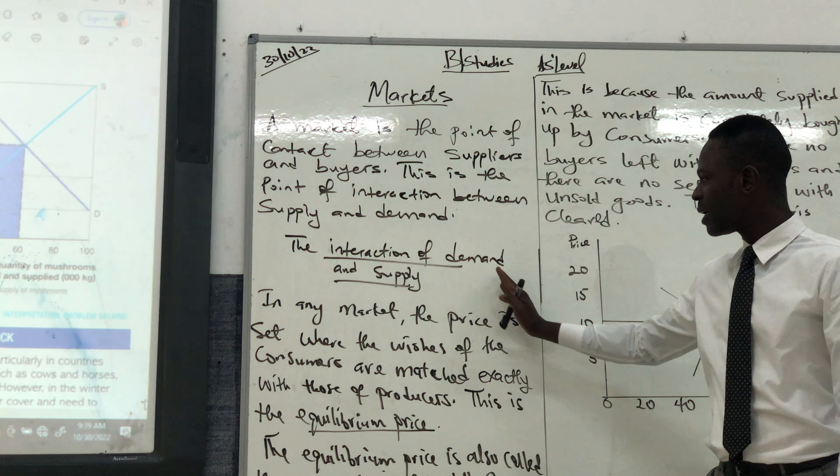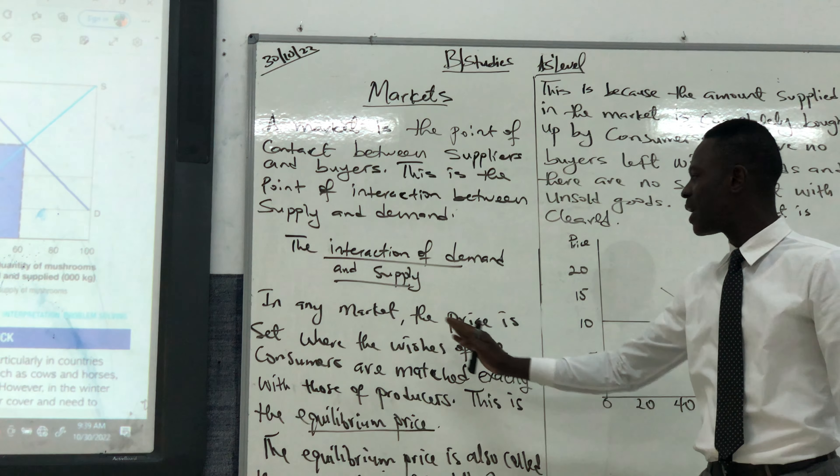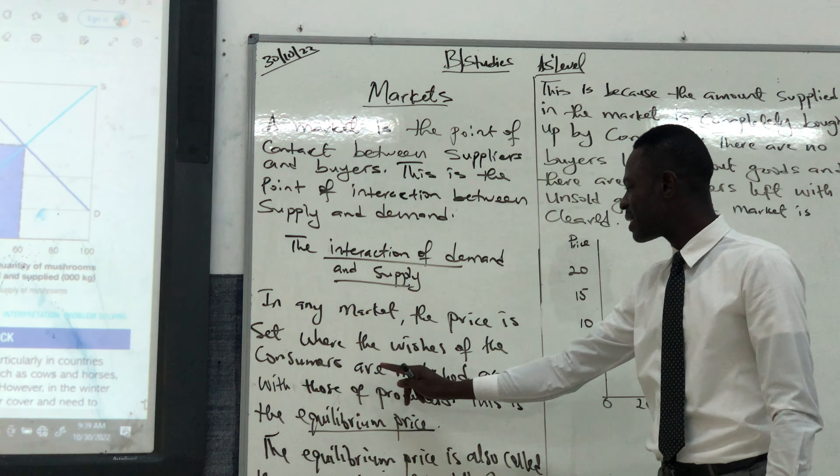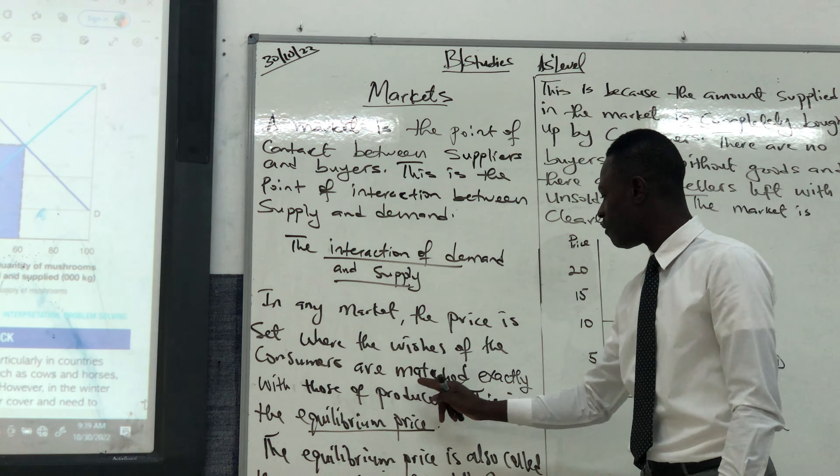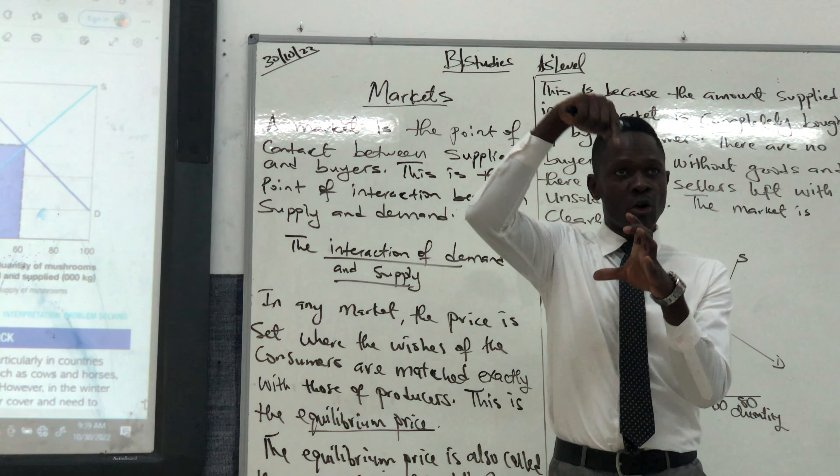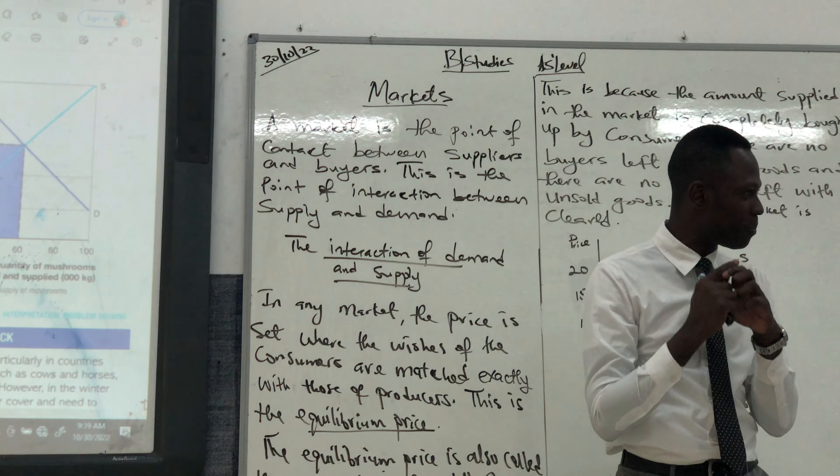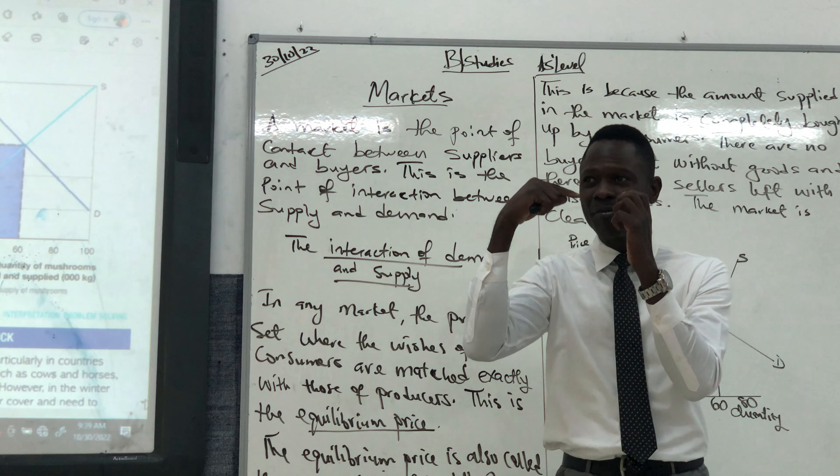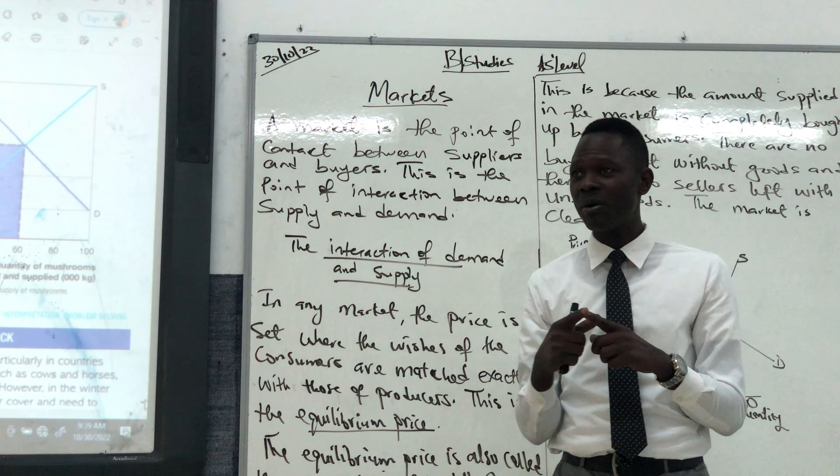Now we go to the interaction of demand and supply. In any market, the price is set where the wishes of the consumers are matched exactly with those of the producers. The consumers have the price they want to pay for their products. The producers have a price that they would wish to sell.